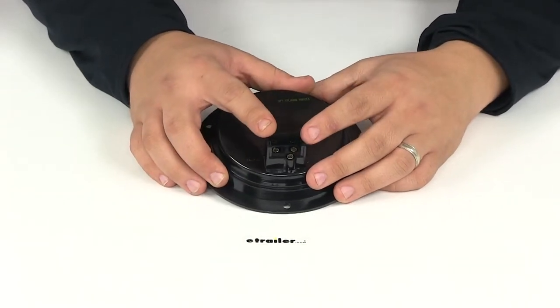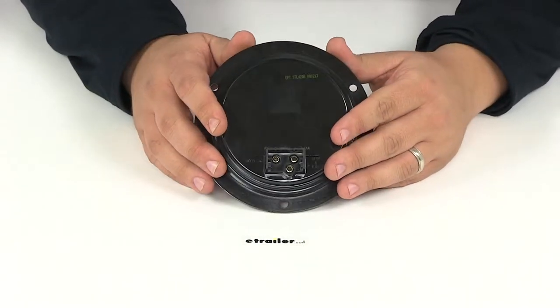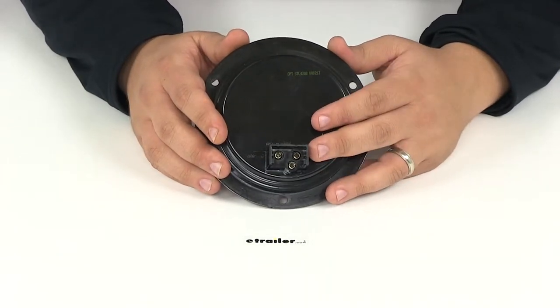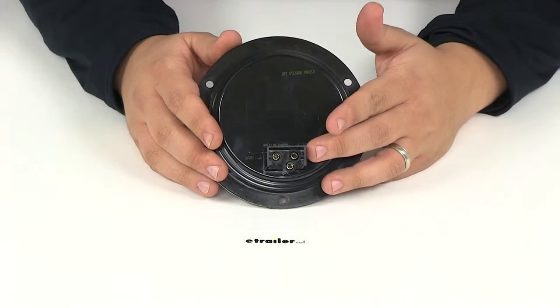Now again that plug is sold separately, you can find that right here at eTrailer.com. If you need a right angle pigtail plug you can use part number A47PB, or if you need a straight pigtail you can use part number A45PB.